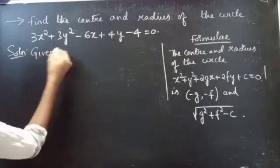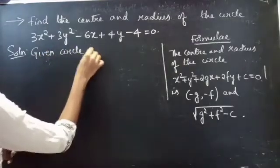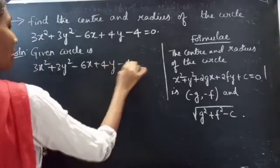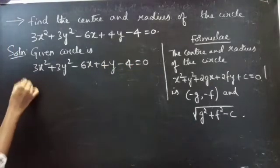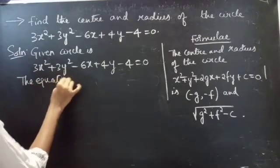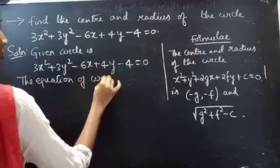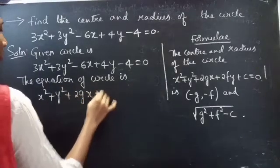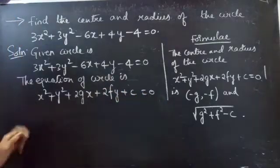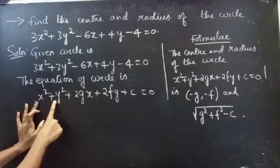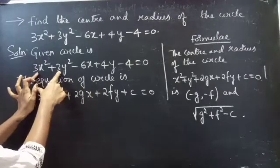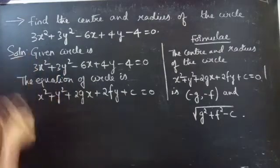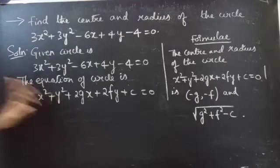We are given a circle: 3x squared plus 3y squared minus 6x plus 4y minus 4 equals to 0. We know that in the standard equation of a circle, the coefficient of x squared and y squared is 1, but in the given circle the coefficient is 3. So we have to eliminate this coefficient 3 to get the coefficient of x squared and y squared equal to 1.